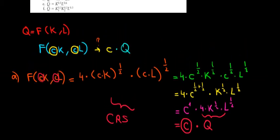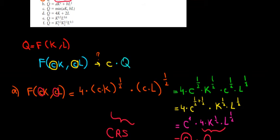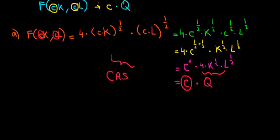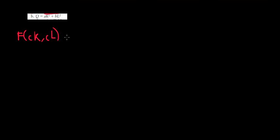Let's solve question B now. What do we have there? A times K-squared plus B times L-squared. Let's see what happens when we include the proportion in the inputs — when we increase the inputs by proportion C. We will have the function looking like A times (CK) squared plus B times (CL) squared.